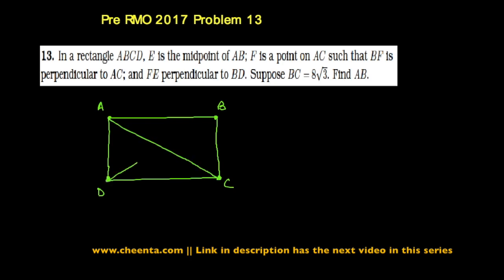Anyway, so what the problem says is that suppose we have E, the midpoint of AB of rectangle ABCD, and we have a perpendicular dropped from B on AC.